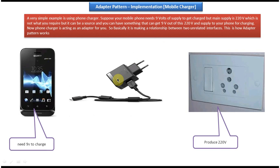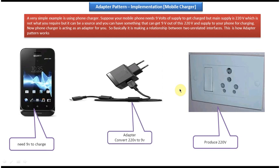So we have an adapter, which is nothing but a mobile charger. One end of the mobile charger we can connect to the electric socket, and the other end we can connect to the mobile phone. What this charger will do is convert 220 volts to 9 volts, then give that 9 volts to the mobile phone so that it can charge properly. So this mobile charger is nothing but the adapter.